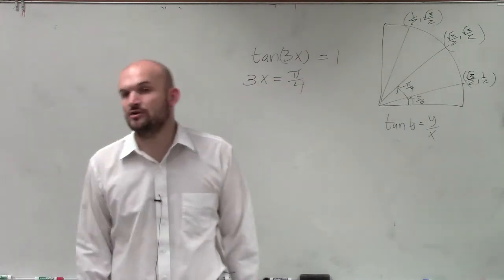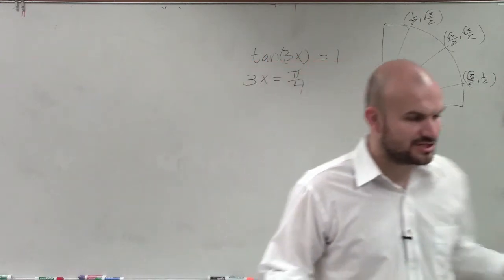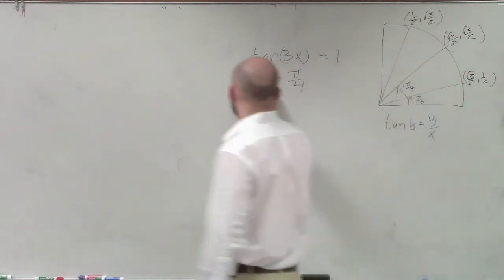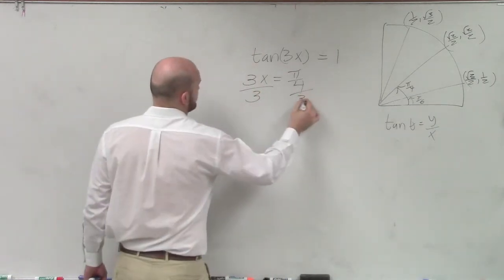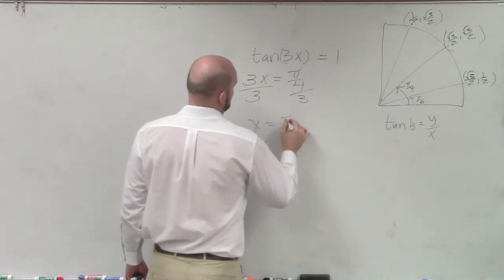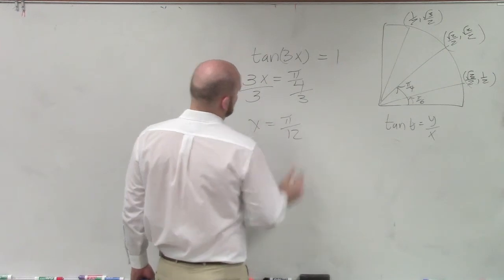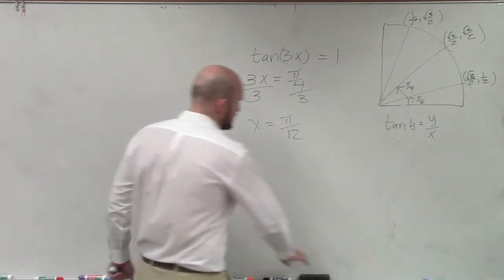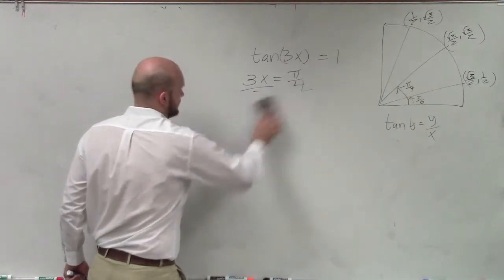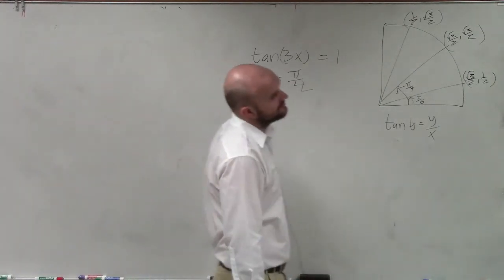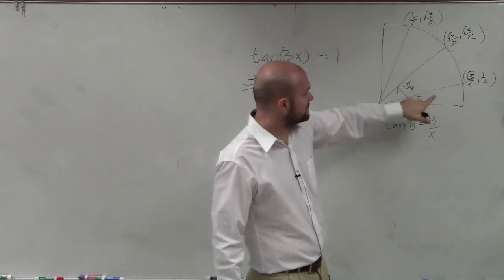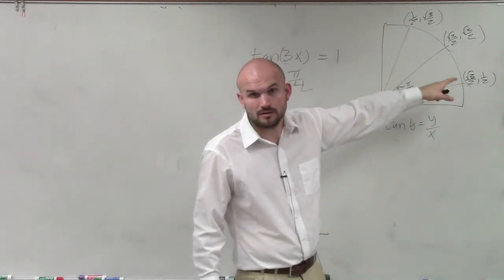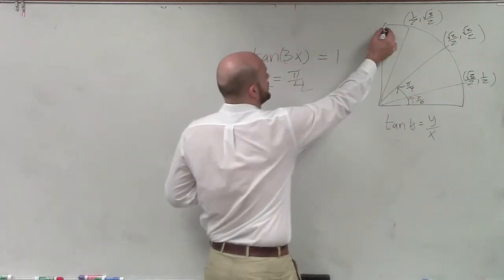Now to find all solutions, you treat this just the same as finding it with not a multiple angle. Then I just divide by 3. x equals π/12. I'm sorry. Shoot. We're finding all the solutions, right? OK. So I forgot a couple steps. So here, it works for π/4, but is that the only time when tangent equals positive 1? No.